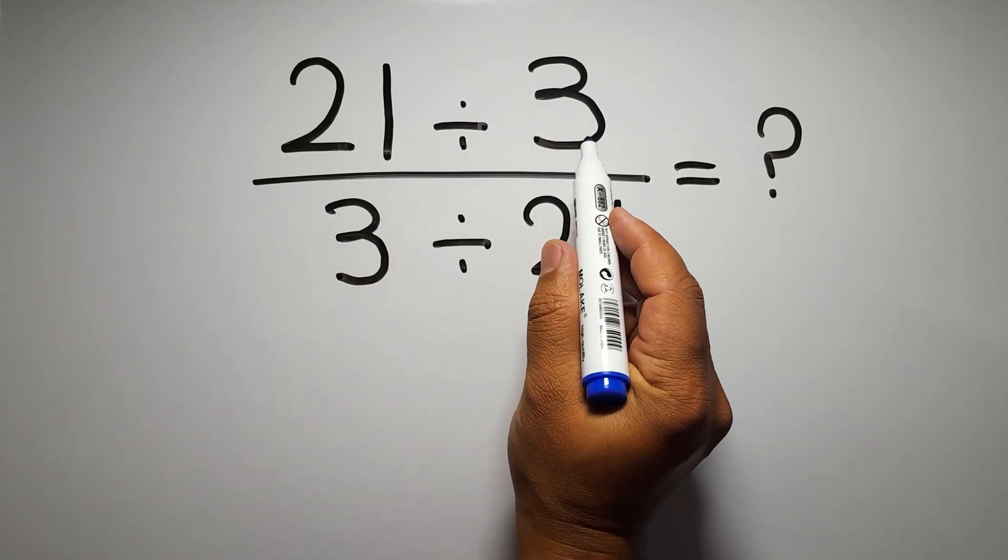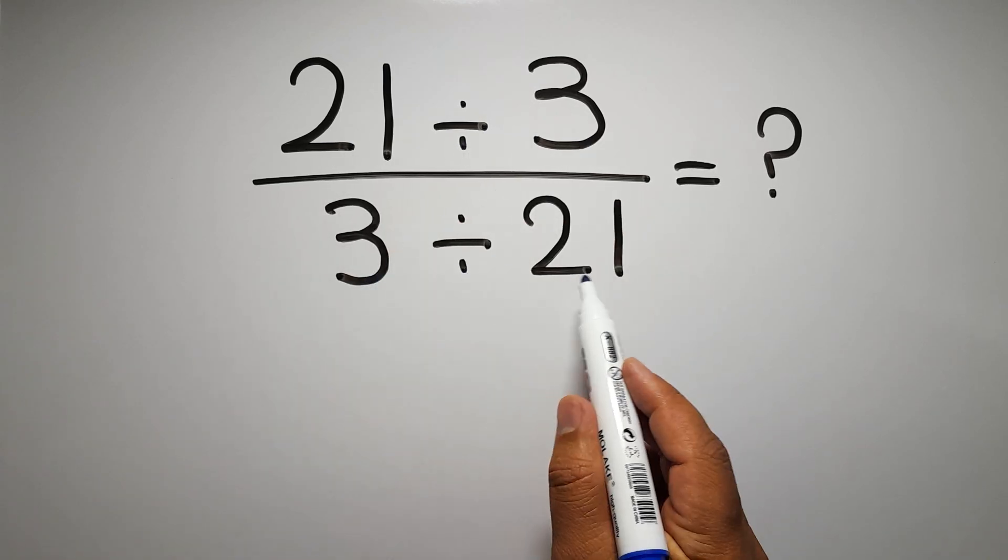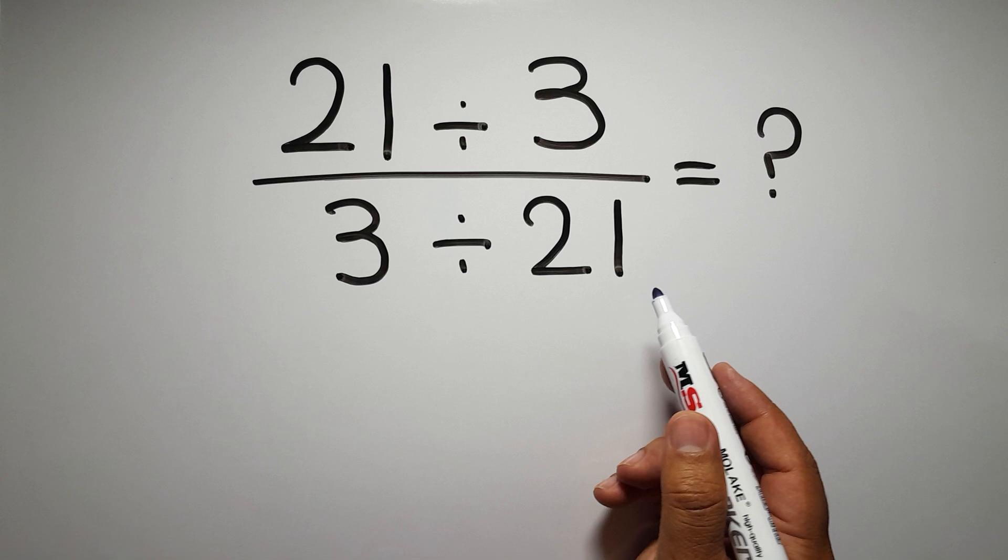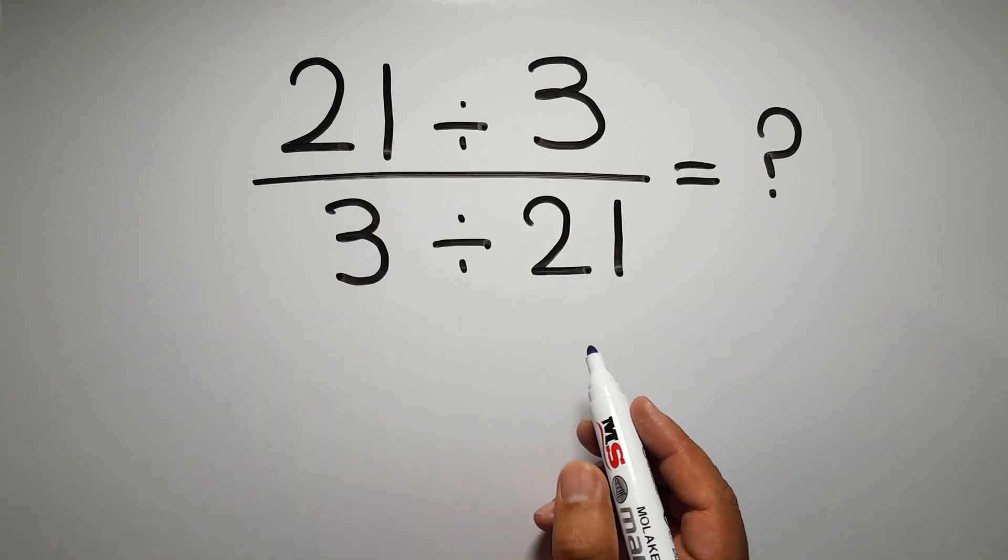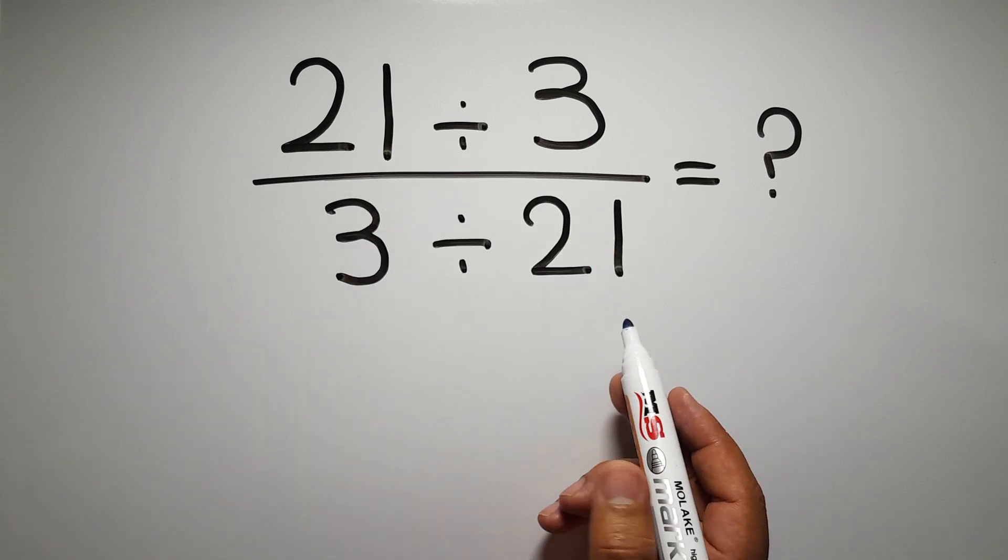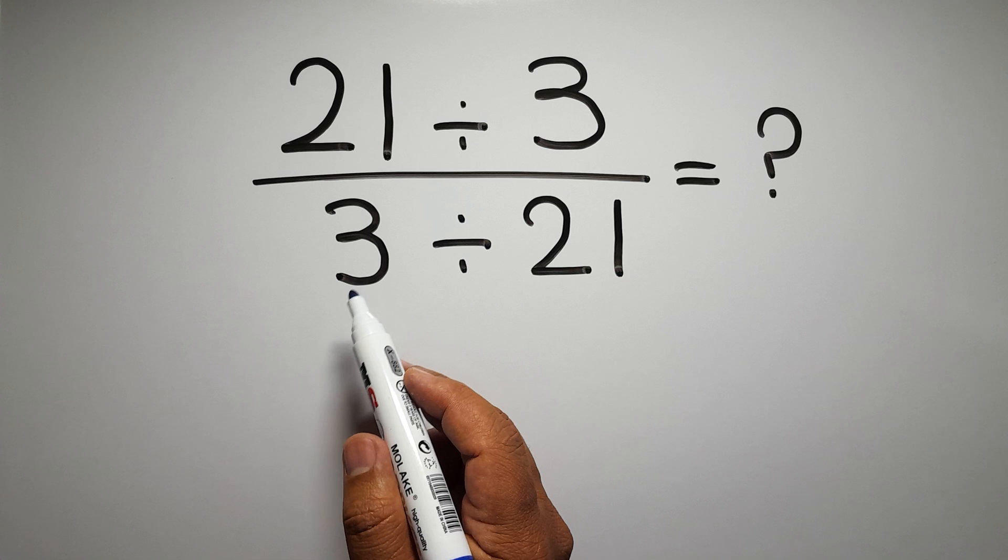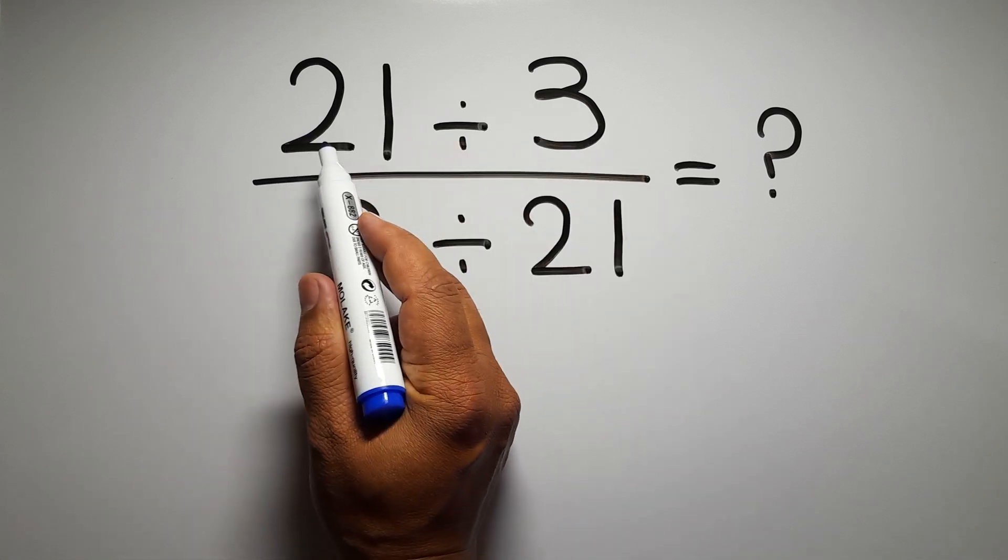21 divided by 3 over 3 divided by 21. Our goal is to find the value of this fraction. Are you ready to solve? Let's go. To start, instead of this fraction we can write the numerator divided by the denominator.